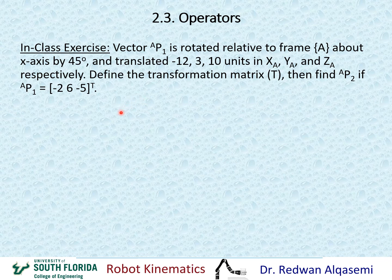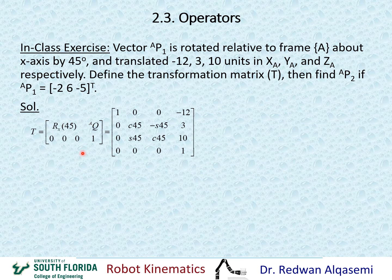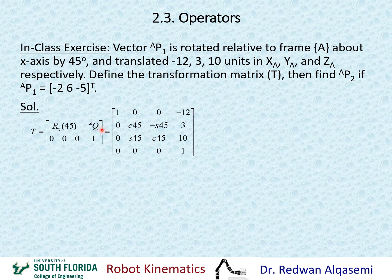Now I'll show the answer. The transformation matrix requires rotation about the x-axis by 45 degrees. Rotation about x means the first element is one with zeros in the same row and column, and then cosine, negative sine, sine, and cosine of 45 degrees for the remaining entries. The translation portion QA is negative 12, 3, and 10, placed in the translation column. The last row is 0, 0, 0, 1, completing the four-by-four transformation matrix.